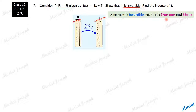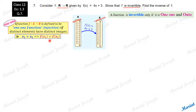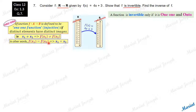What is a one-one function? A function defined from A to B is called a one-one function if distinct elements have distinct images. That is, if x1 is not equal to x2 in the domain, their respective images should also be unequal. In other words, if the images happen to be equal, the pre-images should also be equal. These are two interpretations of a one-one function.